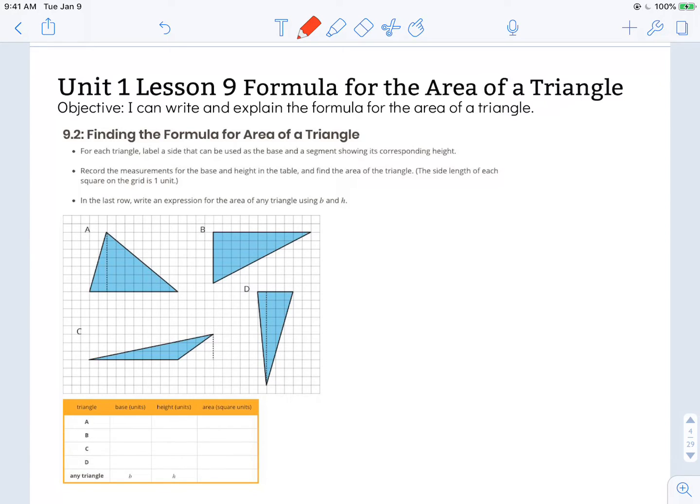So the first thing we're going to do is label a side that can be used as a base and a segment showing its corresponding height. With a base and a height, they have a perpendicular relationship, so I need to have a 90 degree angle where they intersect, where the base and the height are perpendicular from one another.